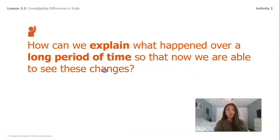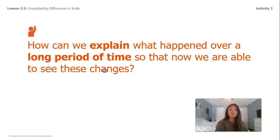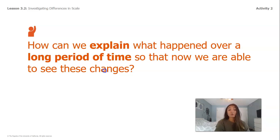So how can we explain what happened over a long period of time so that now we are able to see these changes? We might not be able to notice a tiny piece of rock coming off every few days, but after a long period of time, with lots of little bits of rock eroding or falling off of the mountain due to rain, we will eventually be able to see a change in the shape of our mountain. But again, this will take a lot of time, because as we take a pom-pom off, that's 50 years.